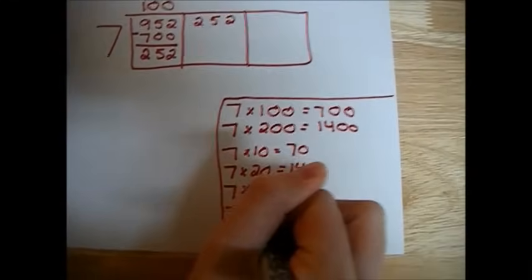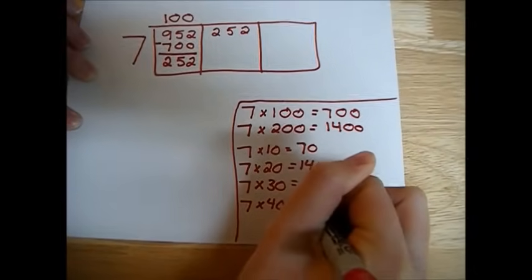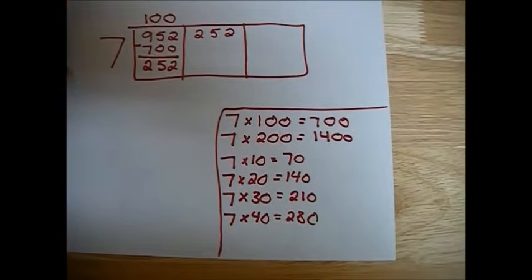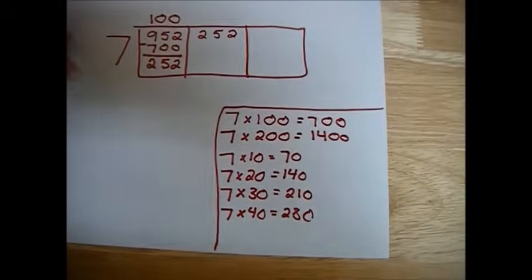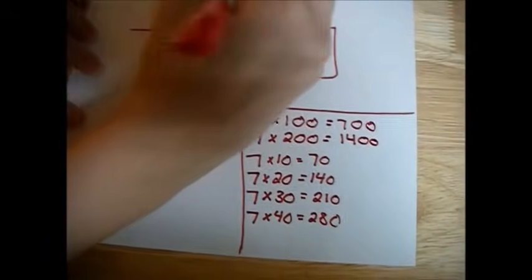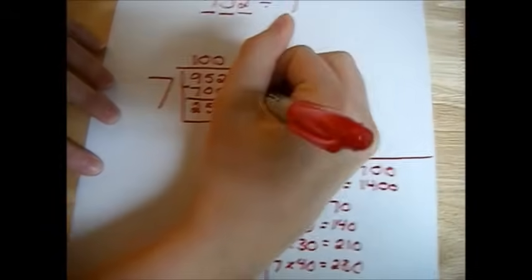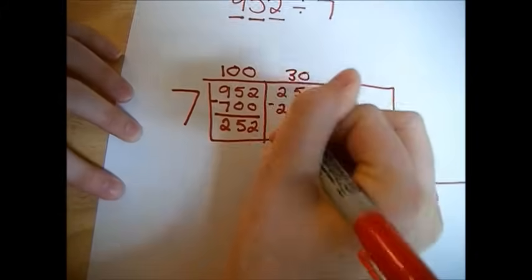We're getting close, but maybe one more. 7 times 40, just to make sure we're not going under. Yep, 280 is too large. So we're going to stick with 7 times 30. We'll put 30 above the box. 7 times 30 is 210, which we put inside.